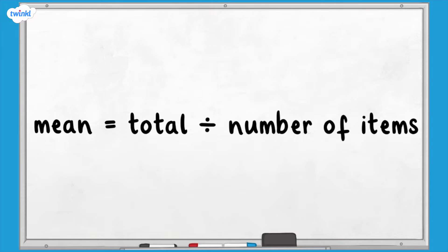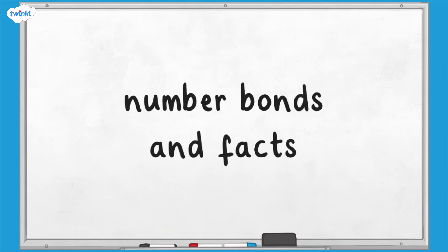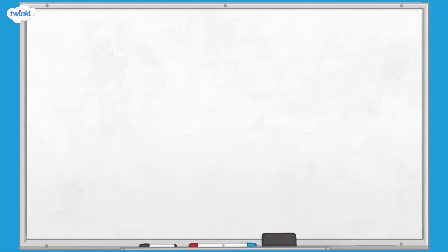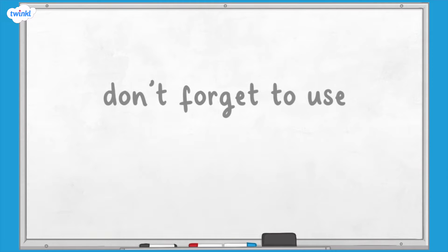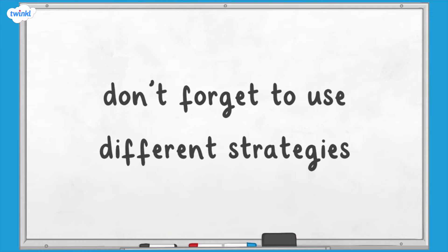Sometimes when we calculate the mean we have to add together a lot of numbers, which can lead to mistakes. Use number bonds and facts to help you decide the best order in which to add the numbers, and don't forget to use different strategies to check your answers as well.